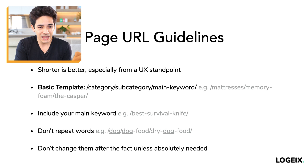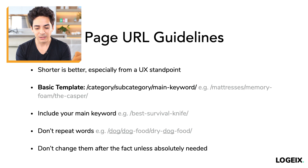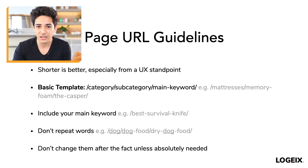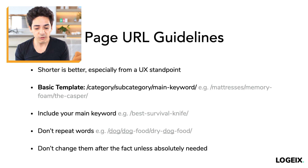In terms of a URL template, here's a simple one: slash category, slash subcategory, slash main keyword. For example: slash mattresses, slash memory foam, slash Casper — the product or brand name. If you have a simple blog, you could just have slash blog-post-name, or slash blog, slash blog-post-name. For a best survival knife page, it would be slash best-survival-knife. Just include the main keyword and don't overthink it.